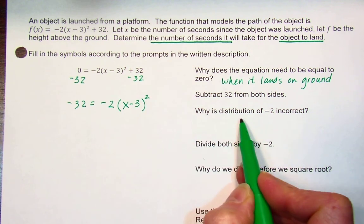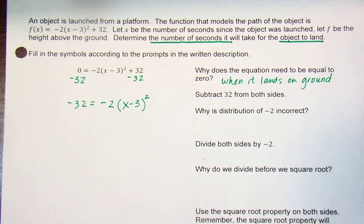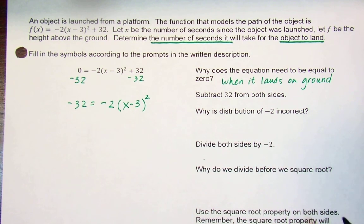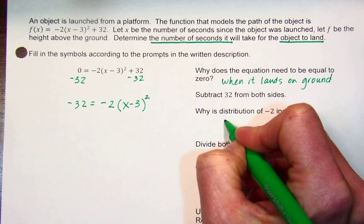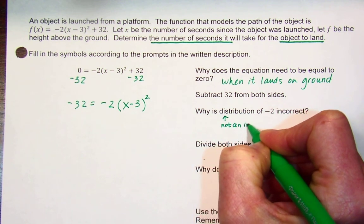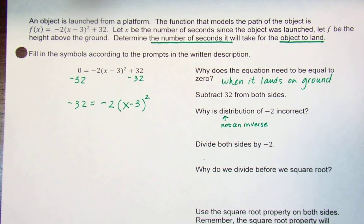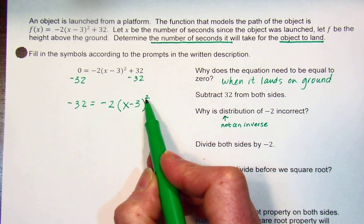It says we are not going to distribute negative 2. That's incorrect for a couple of reasons. First of all, distribution is not an inverse. We are solving by inverses. Why would we distribute?